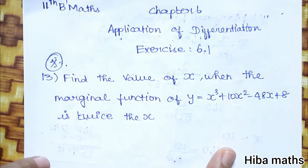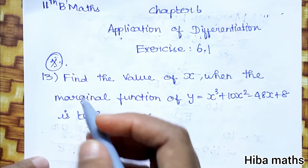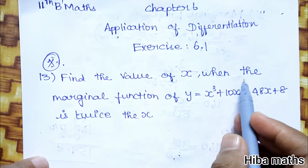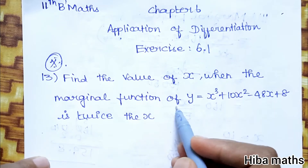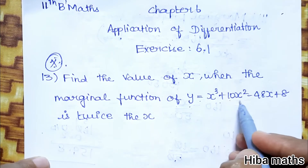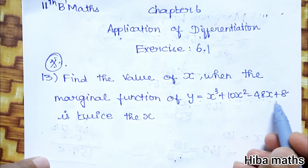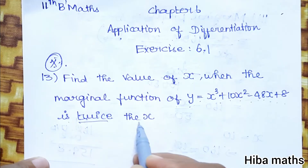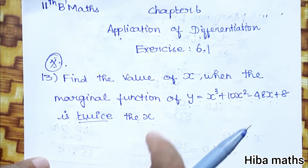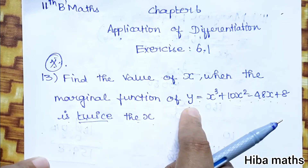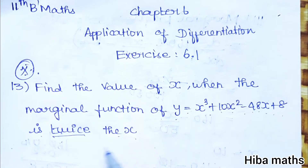In the question, find the value of X when the marginal function of Y equal to X cube plus 10X square minus 48X plus 8 is twice X. So we need to find the value of X where the marginal function of Y satisfies this condition, which is twice X.